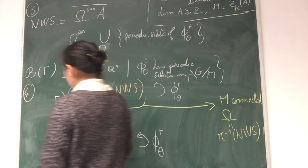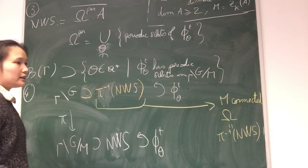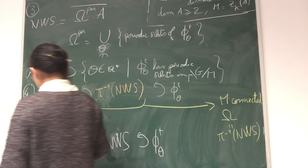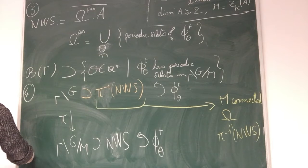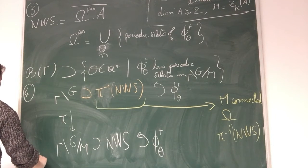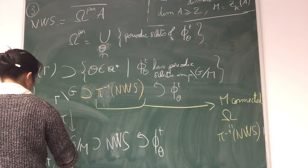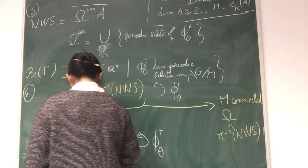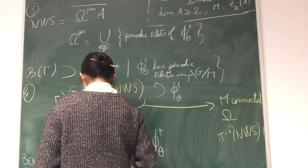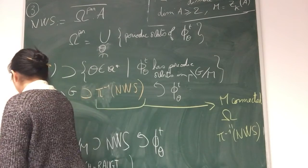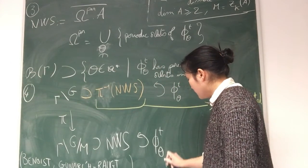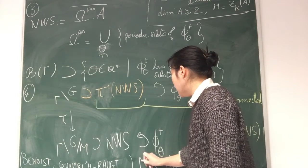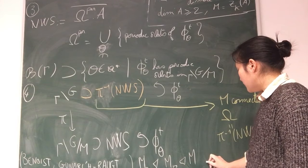Now when M is not connected, for instance in the case of SL(n,R), I'm going to introduce the normal subgroup of M containing the connected component of M and of finite index.